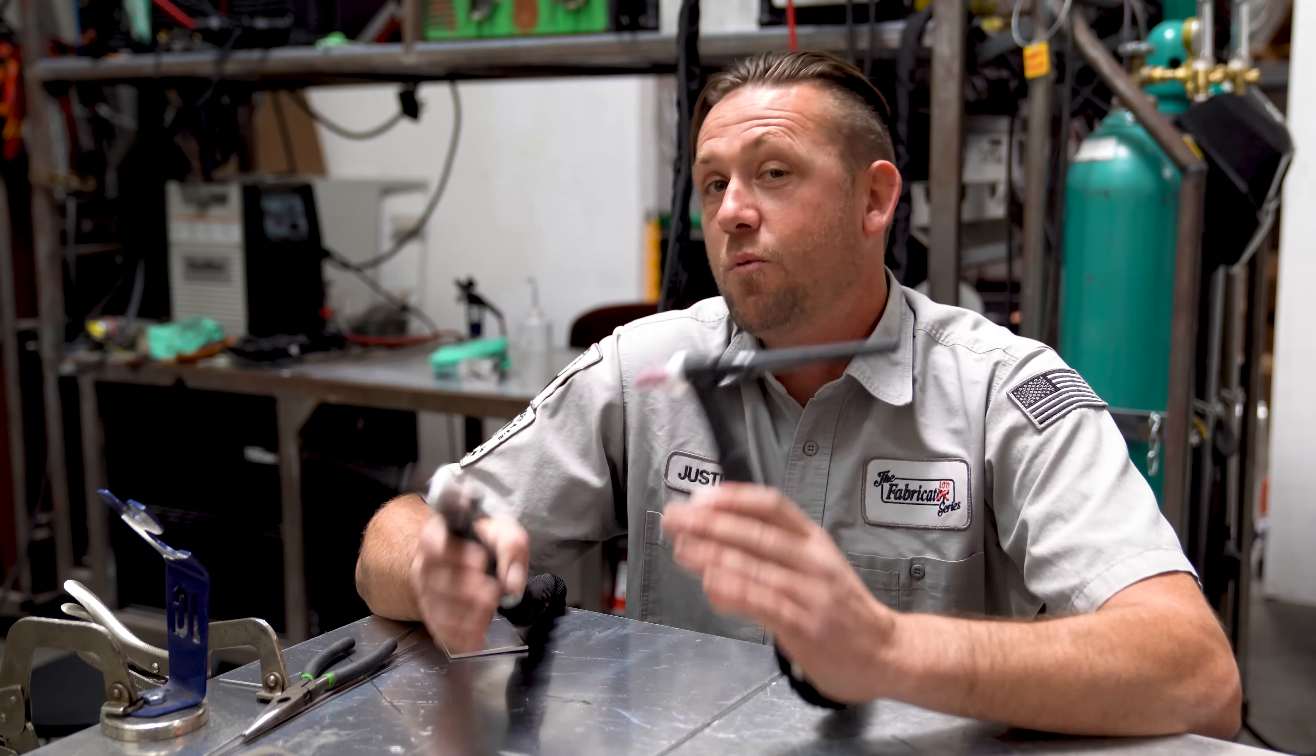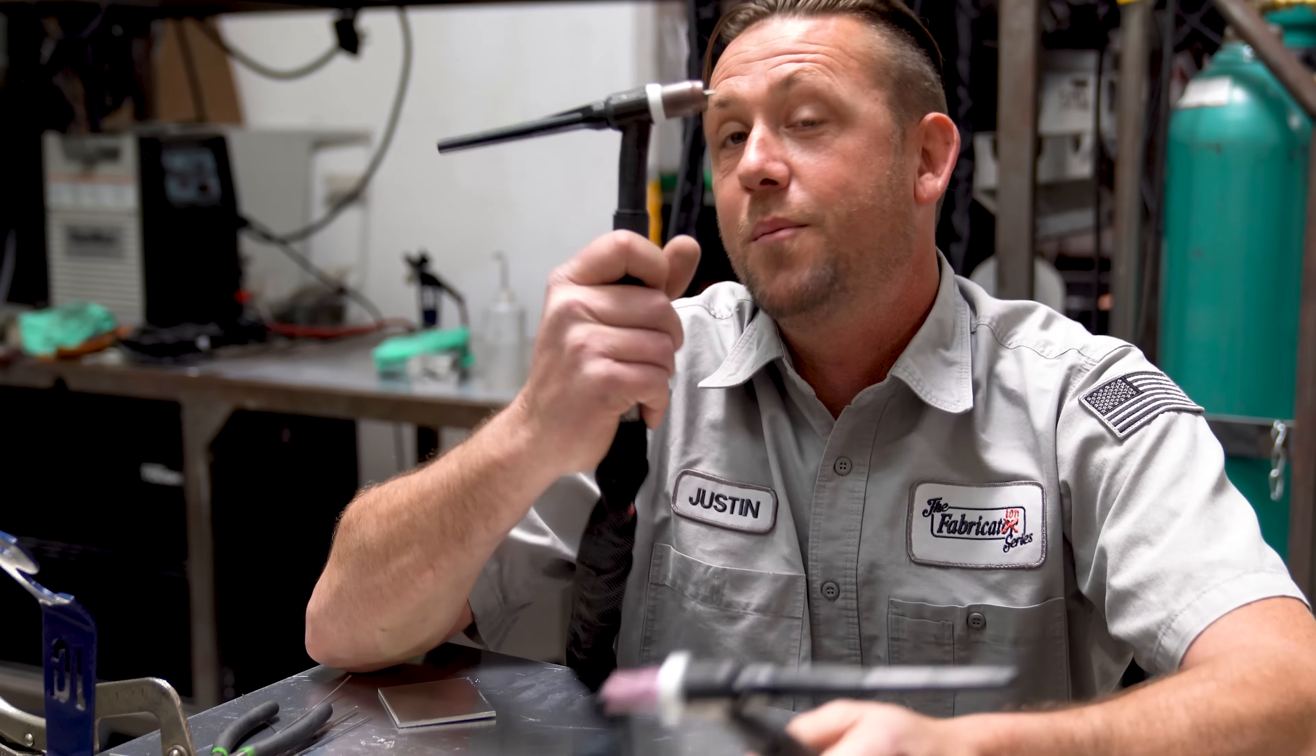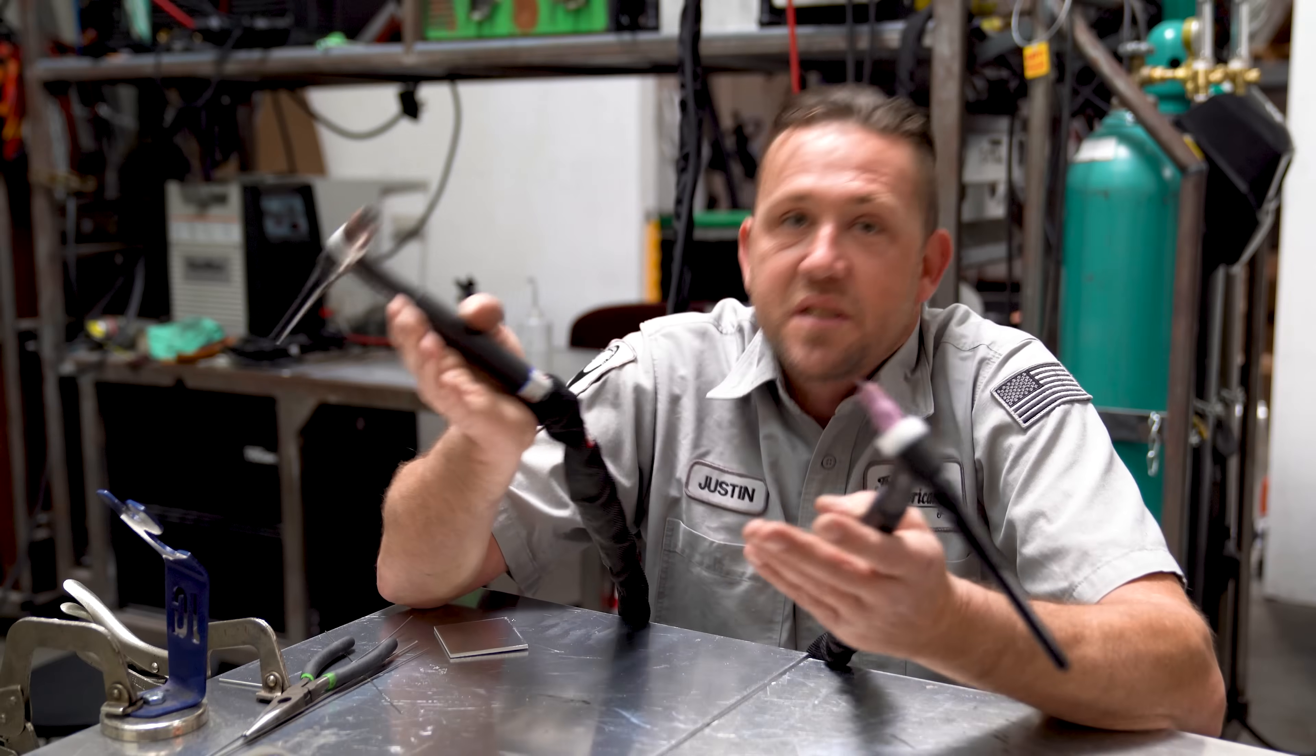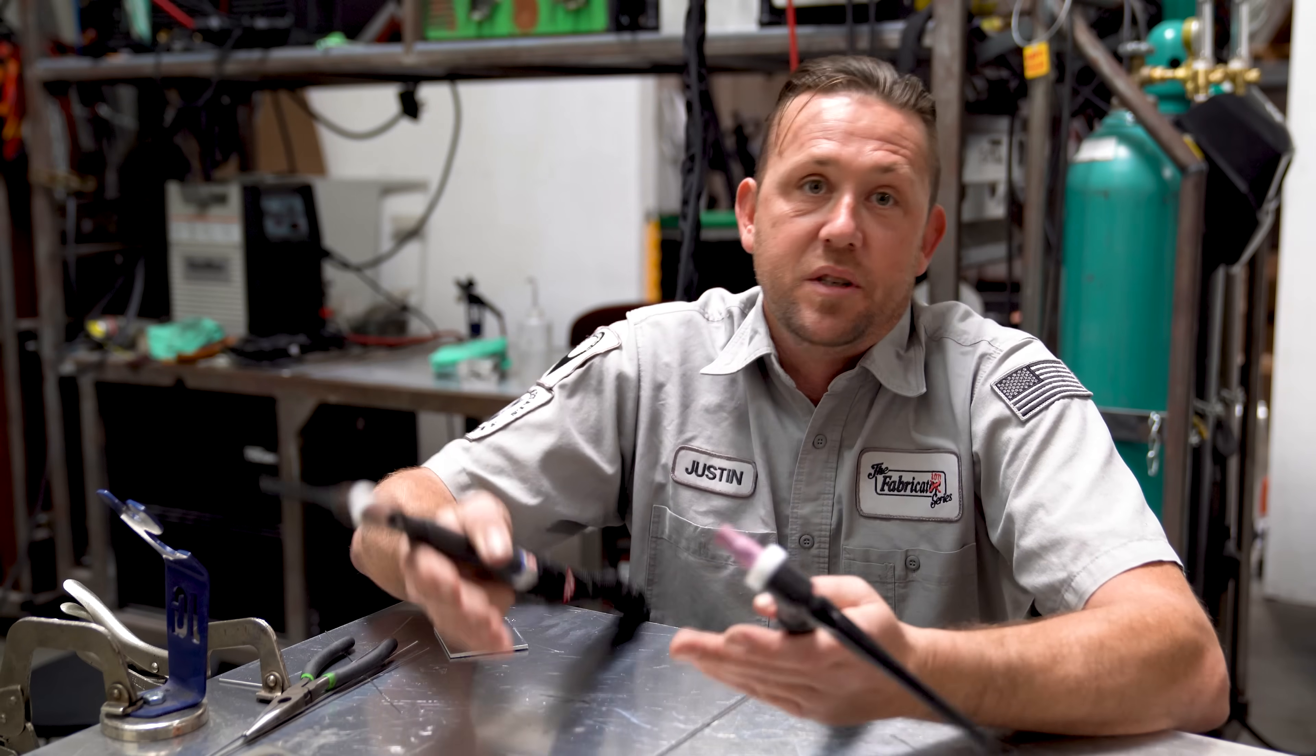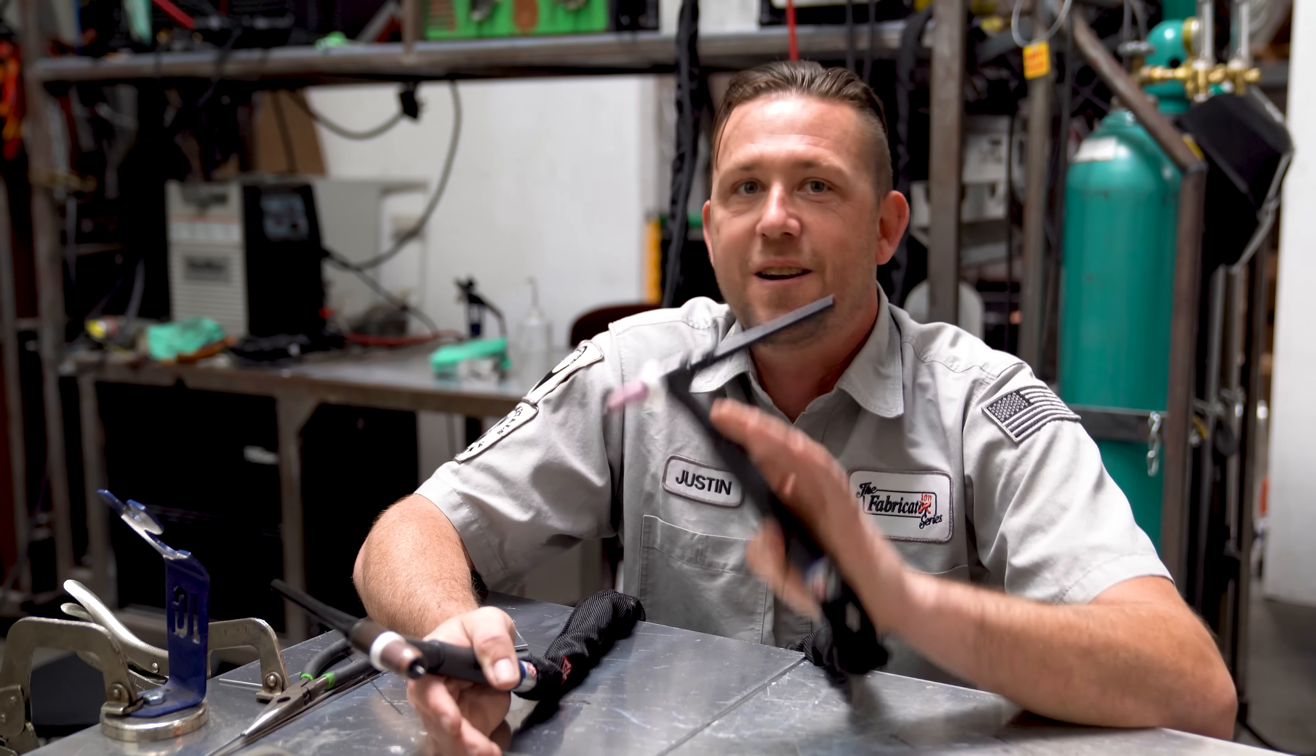If you ask most professional welders which cup they prefer on aluminum, you'll probably hear one of two answers. It's either going to be the number five standard or the number eight with gas lens. Of course, either one of those will work, and anything in between is also sufficient. But let's take a look at why the number five standard is the most common.